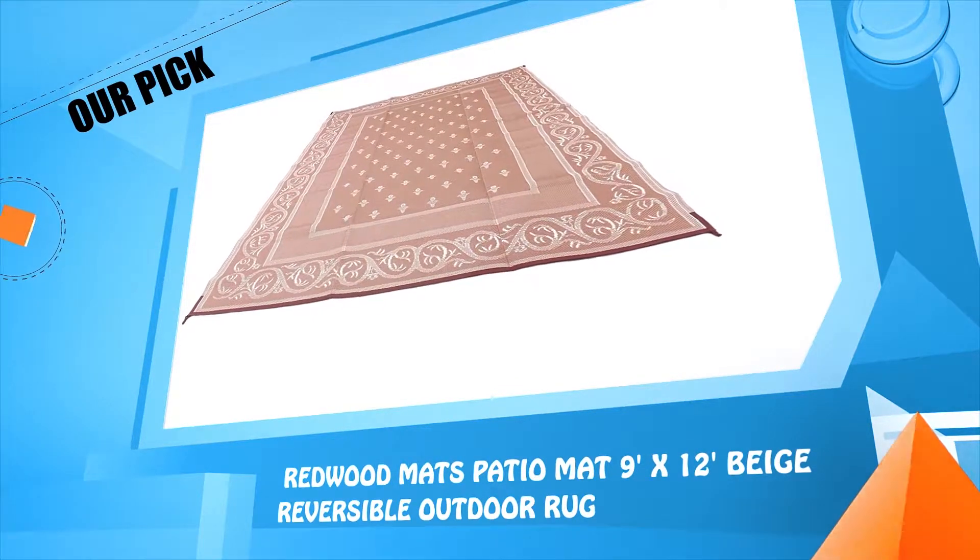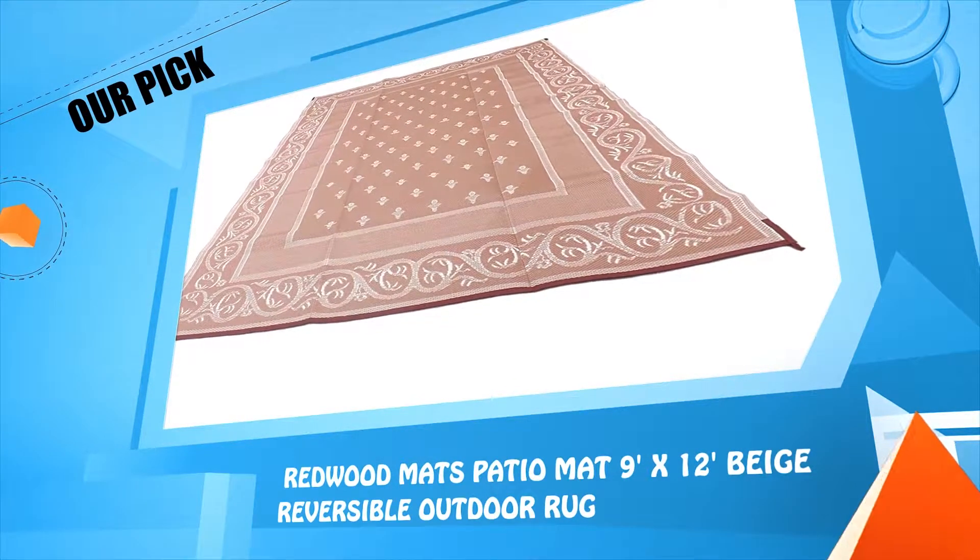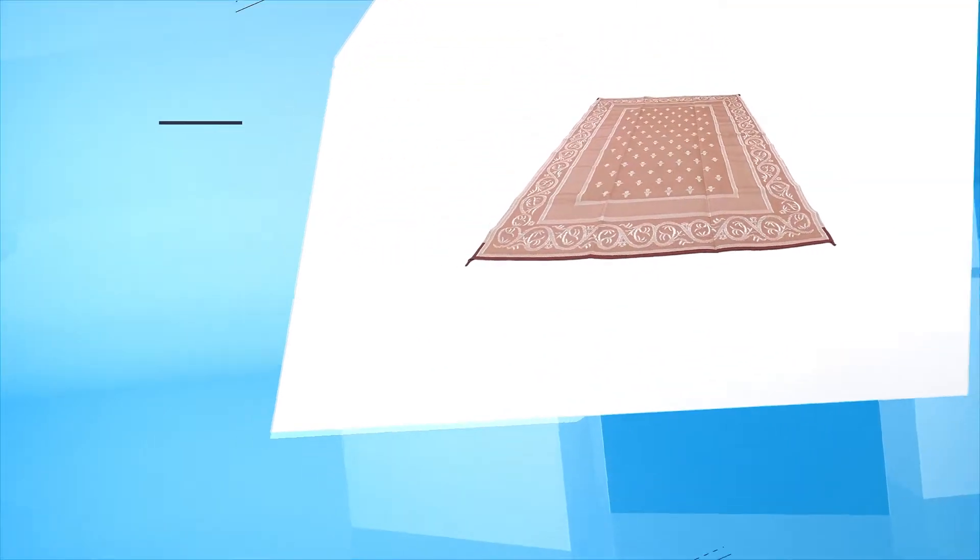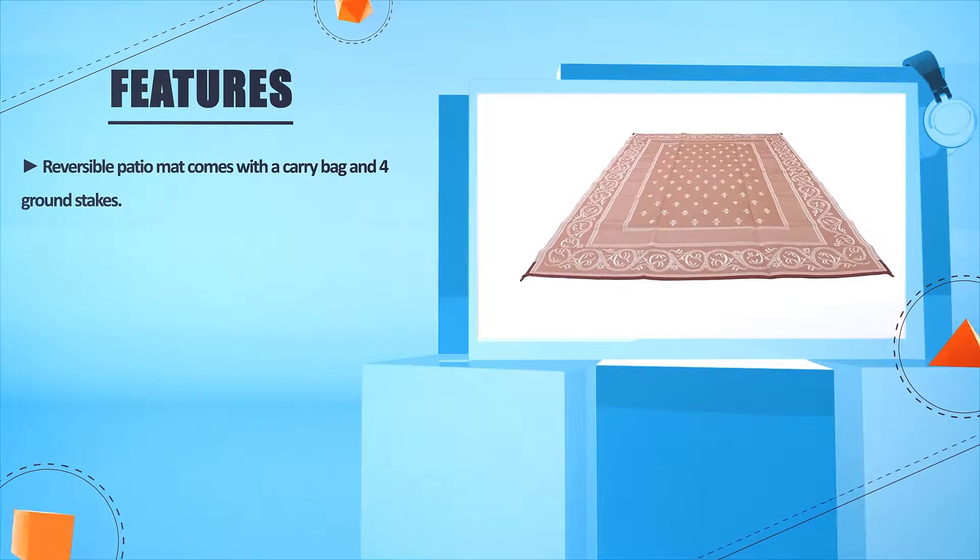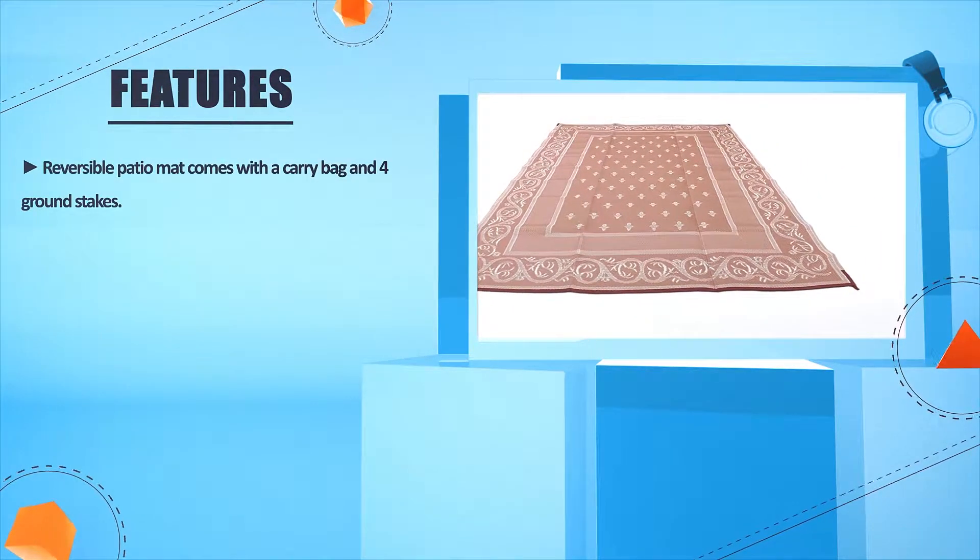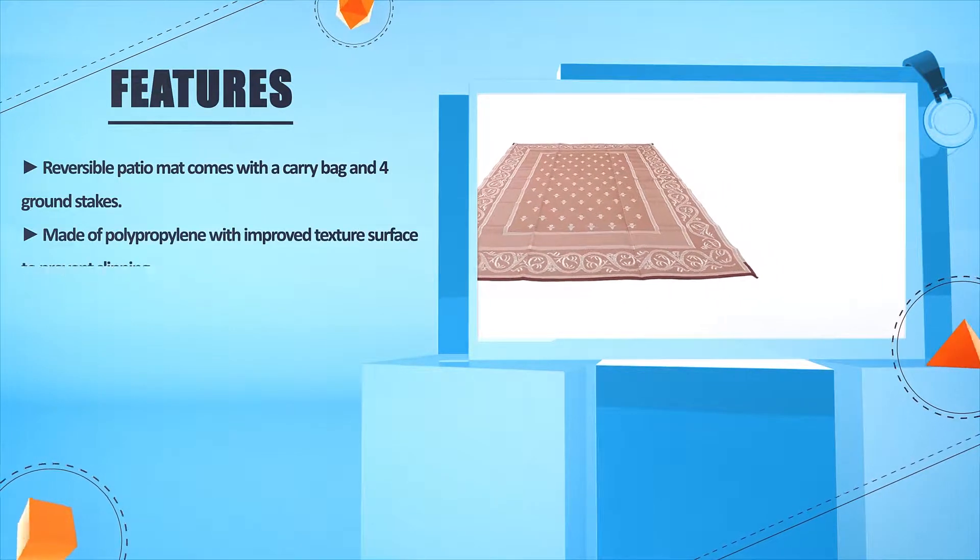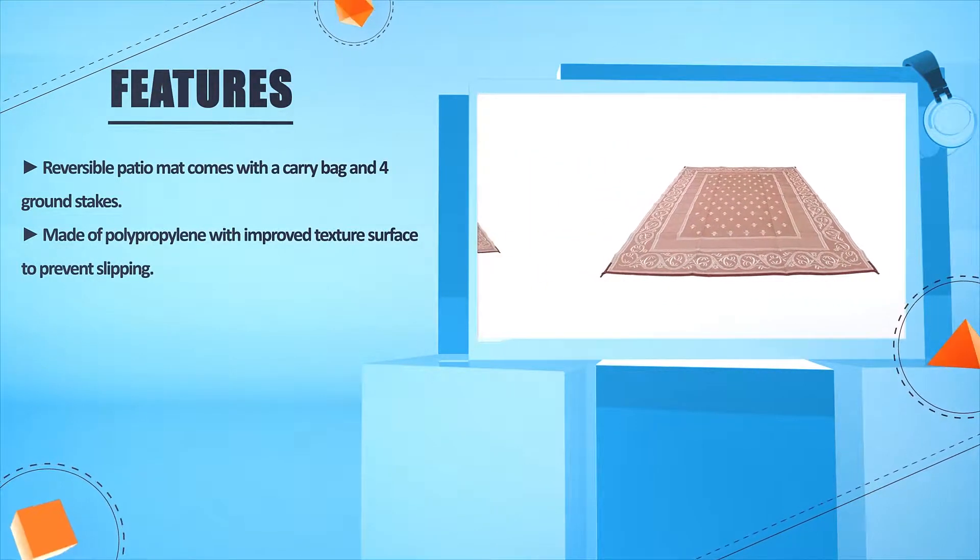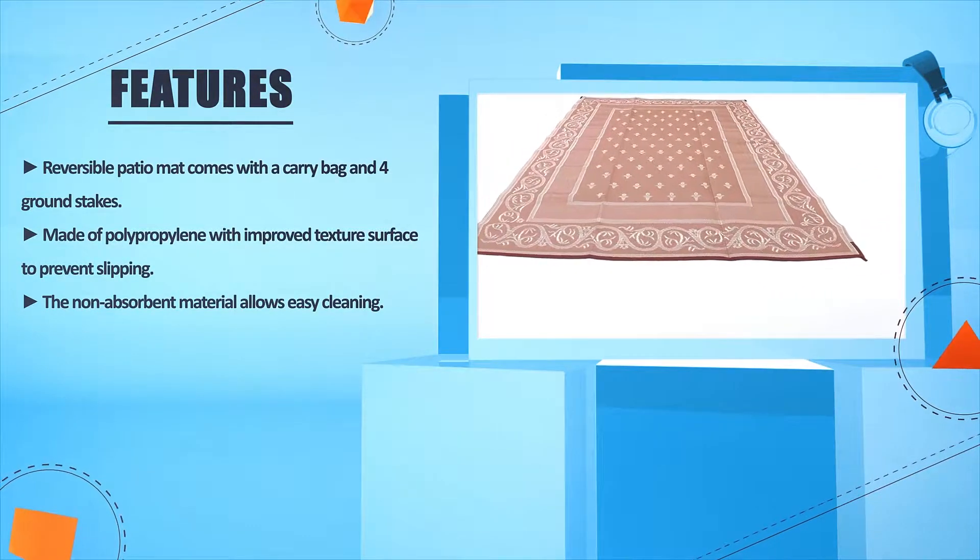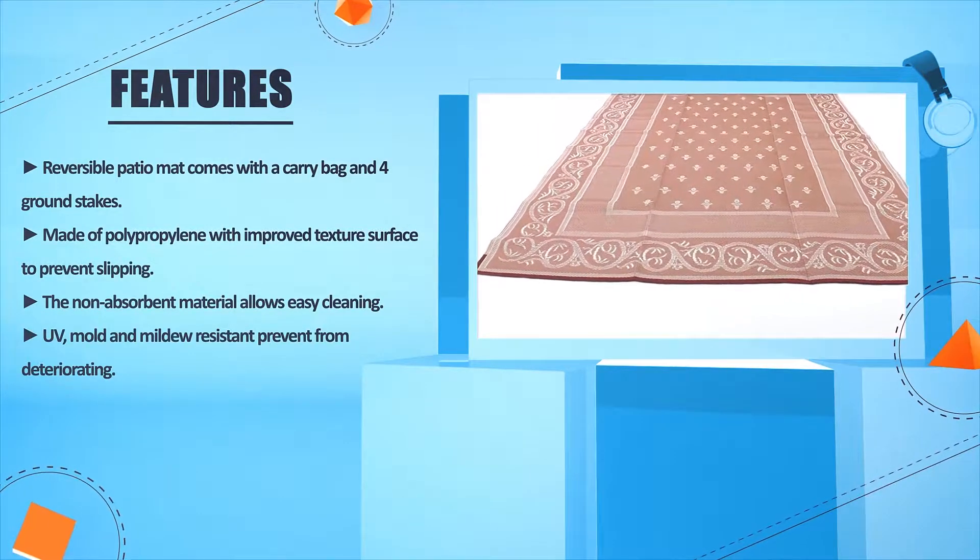Number five: Redwood Mats Patio Mat, 9 feet by 12 feet, beige reversible outdoor rug. Reversible patio mat comes with a carry bag and four ground stakes. Made of polypropylene with improved texture surface to prevent slipping.